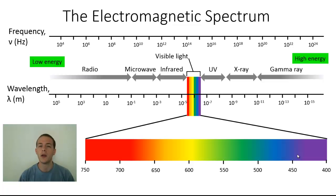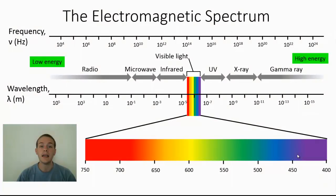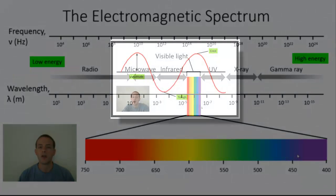The only part of the spectrum we can see is this tiny little sliver here labeled visible light. Everything else is completely invisible to us. In my last video we talked about some general properties of waves.